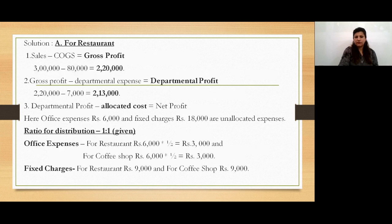Let's start solving for restaurant first. We get gross profit by deducting cost of goods sold of 80,000 from sales of 3,00,000, giving a gross profit of 2,20,000. In the next step, we calculate departmental profit by deducting departmental expenses of 7,000 from gross profit, giving a departmental profit of 2,13,000.